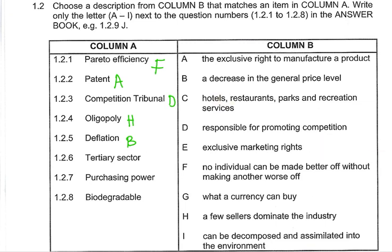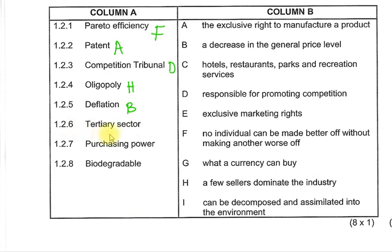Moving on to the next question — tertiary sector. This is the sector that deals with services. So C is the correct answer: hotels, restaurants, parks, recreation, and services. We know very well that the tertiary sector is responsible for services or any services provided in the economy. Then purchasing power, 1.2.7 — the correct answer is G — what a currency can buy.